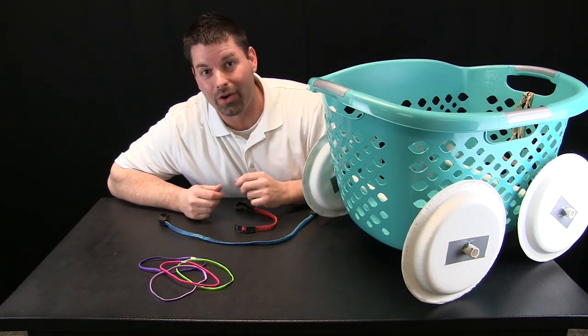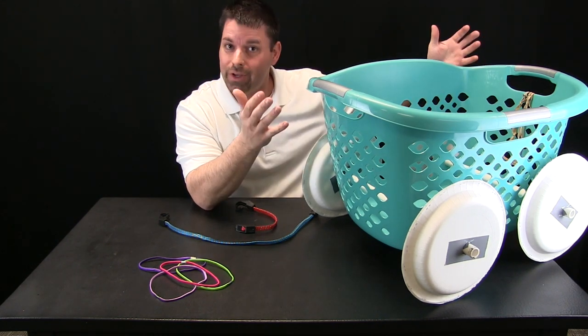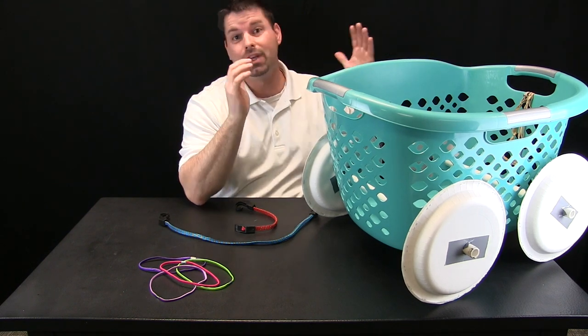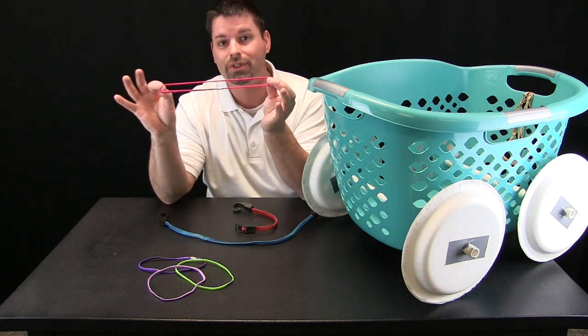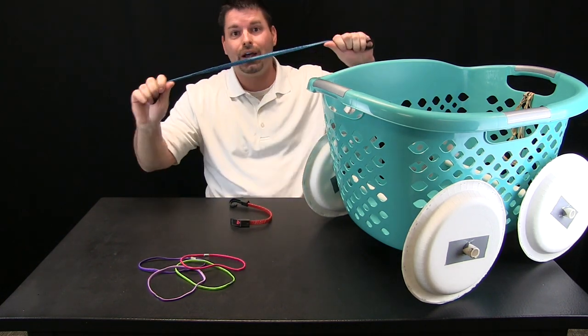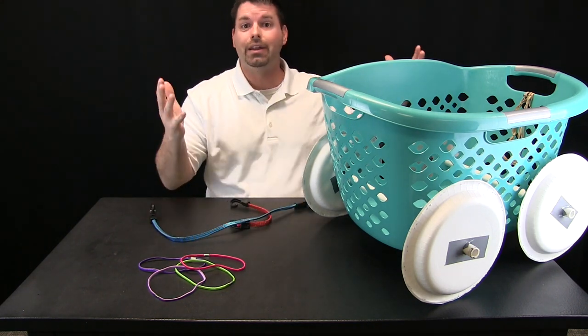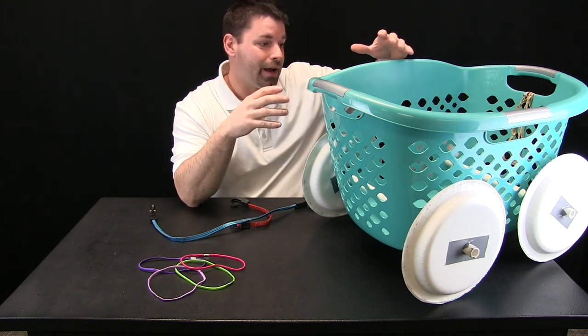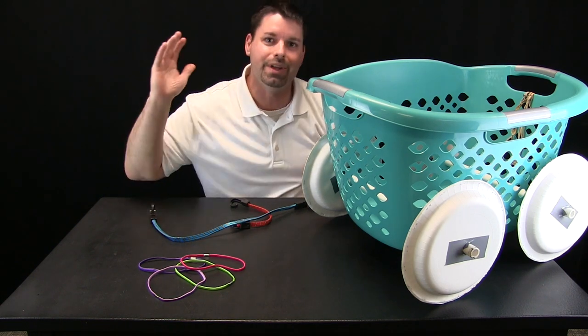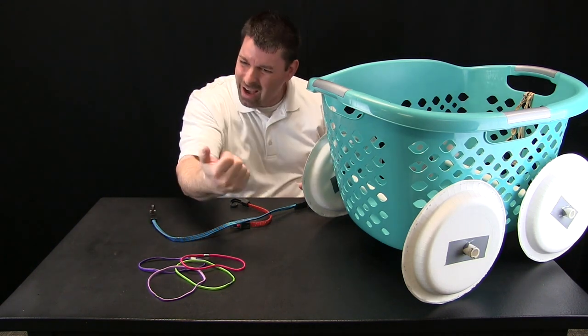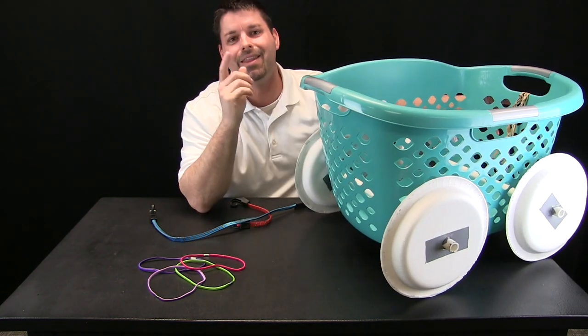That was an awesome test run down our hallway, but our science does not have to stop there. We could redesign our laundry basket car and see if we can make it faster, see if we can make it go further, see if we can make it better. How? Well, we do not have to use rubber bands. What if I used hair tie bands? Or what if I used elastic straps? What if I changed my wheel design? What if I actually added laundry and made my car heavier and had a competition to see which laundry car could carry the most laundry down my hall? I could measure how far it goes. I could time how fast it goes. I could do so much science with a laundry basket and that is cool.